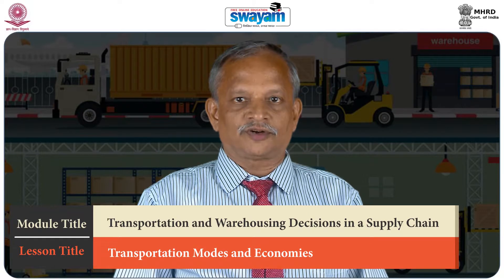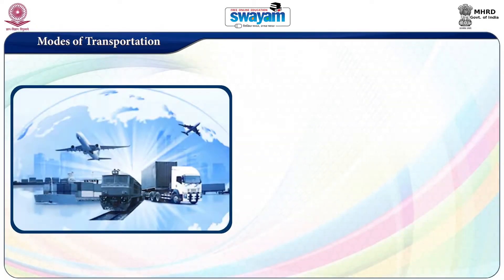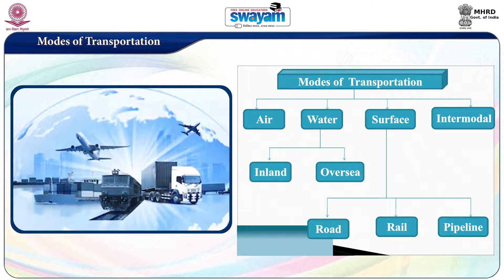In the last edition, we discussed the role of transportation and the principles of transportation in a supply chain. In this edition, we will discuss the different modes of transportation and the impact of transport economies in a supply chain. The different modes of transportation are given in the diagram: air, water, surface, and multimodal transportation. There are five basic transportation modes — air, water, and surface. Surface includes roadways, railways, and pipeline. All transportation modes are vital for a sound transportation system. Let us discuss the merits and limitations of each mode of transportation.